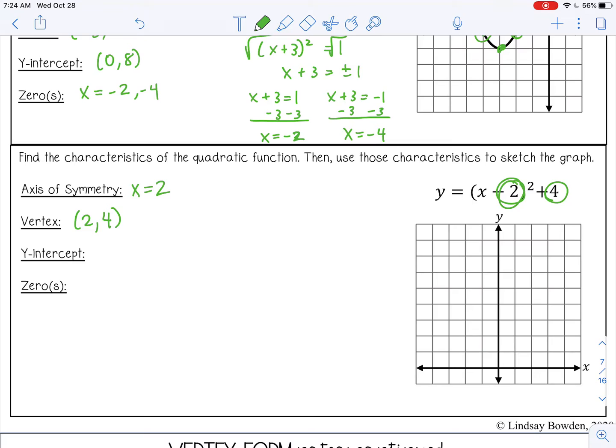Let's go ahead and graph that. Y-intercept, we can plug in 0 for x. So that will be 4 plus 4, so 8. And remember, you can always use the symmetrical point on the other side of your axis of symmetry because parabolas are always symmetrical.